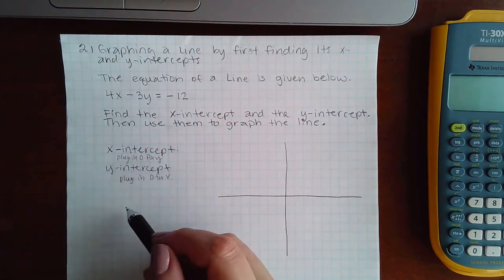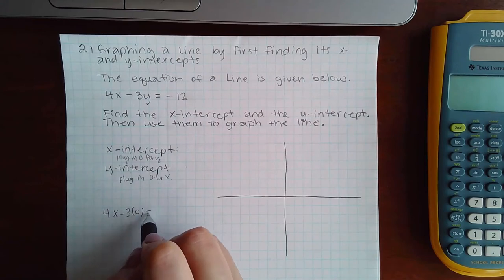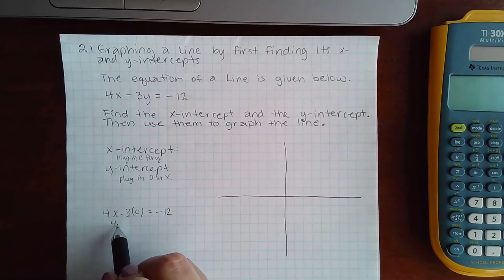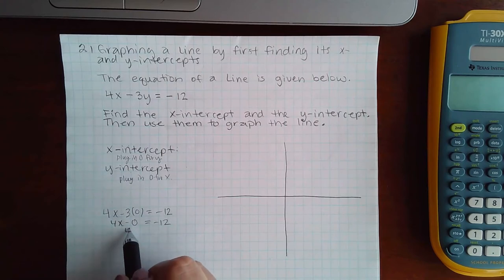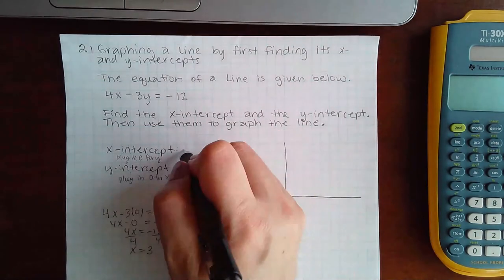So we're going to do the top one first because that's the order they gave it to me in. So I have 4x minus zero equals negative 12. I get negative three, and so that's the x-intercept.